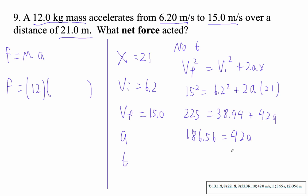Now I divide both sides by 42. So I've got 4.4419 meters per second squared.